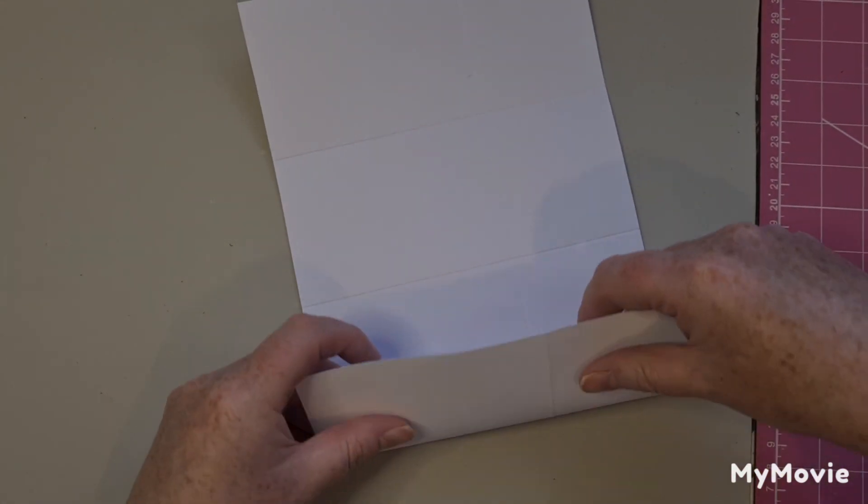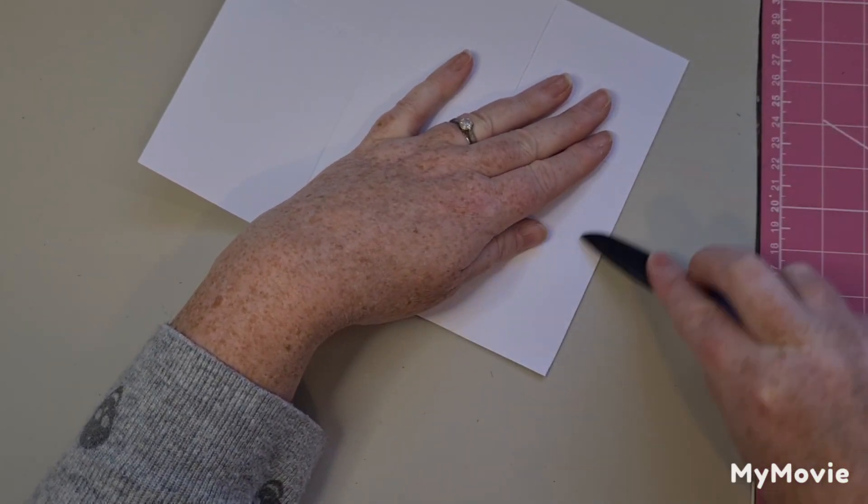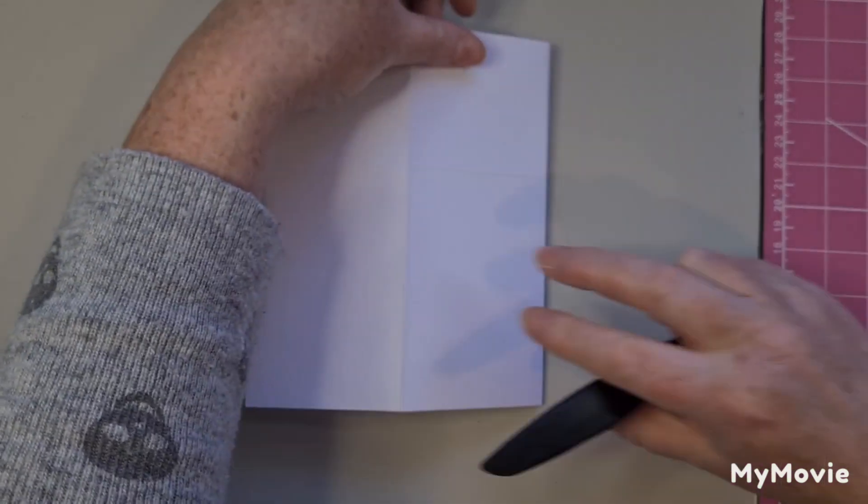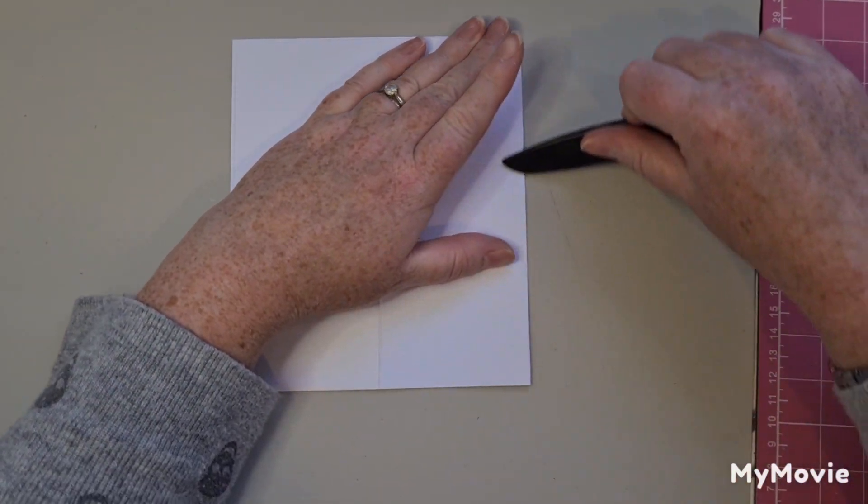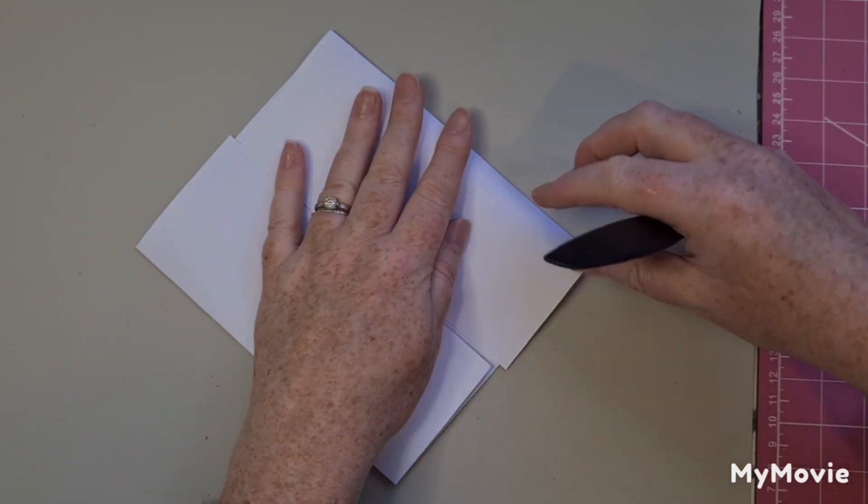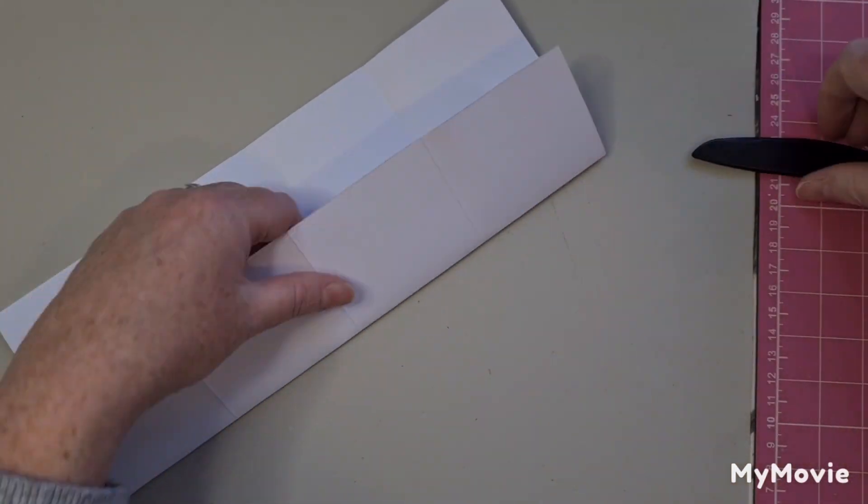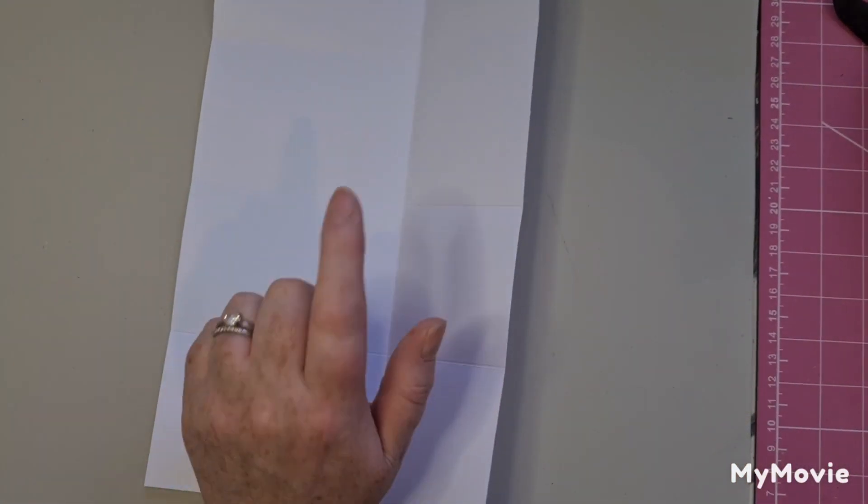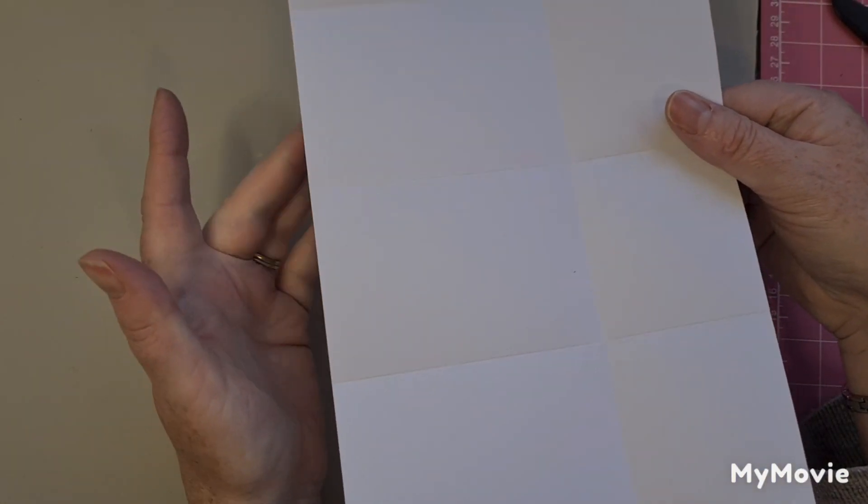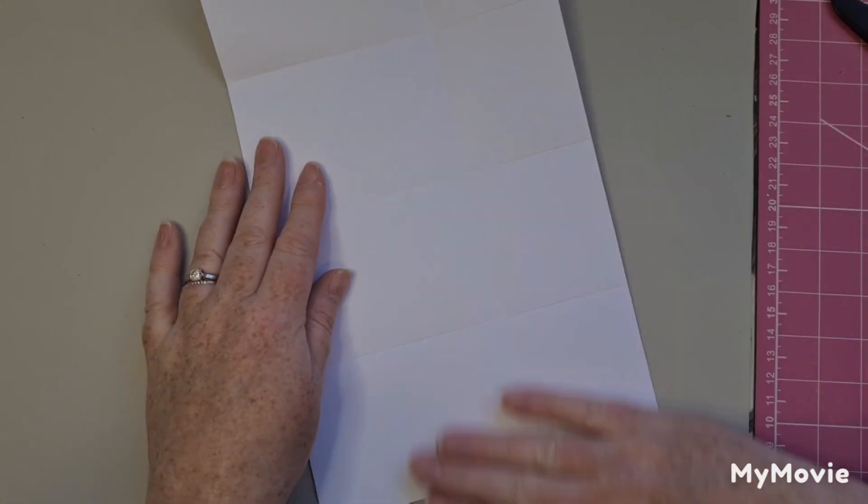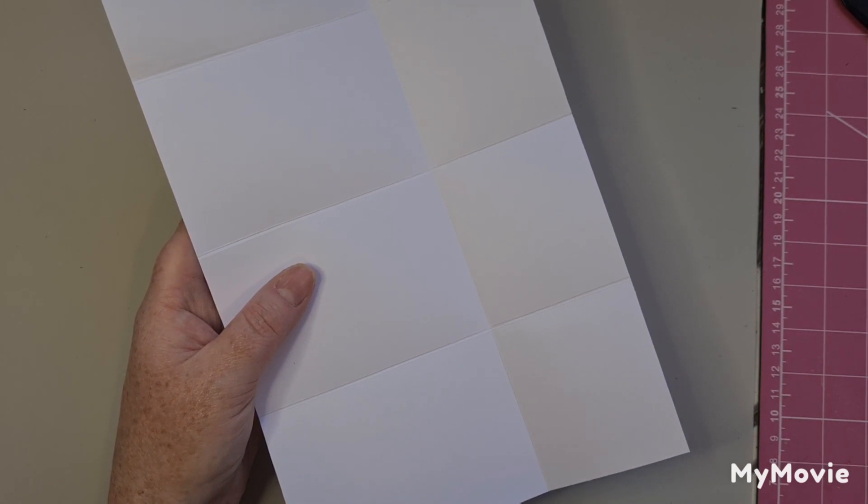That was two and three quarters, five and a half and eight and a quarter. And then I'm just going to do a bit of folding. I've used a thin card because I'm going to decorate it and that will bulk it up. But I find when you want something not too heavy and not too bulky to fold up. I think this is about a 180 GSM or something.